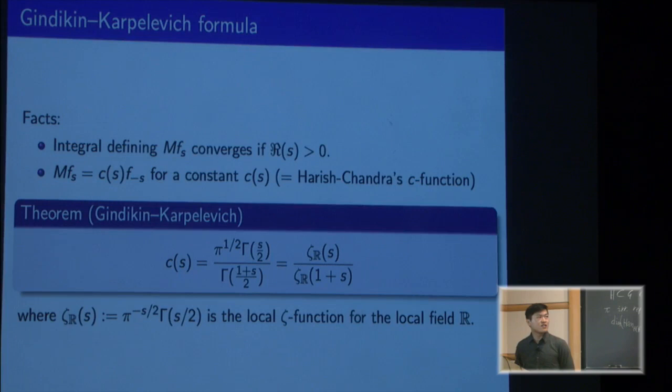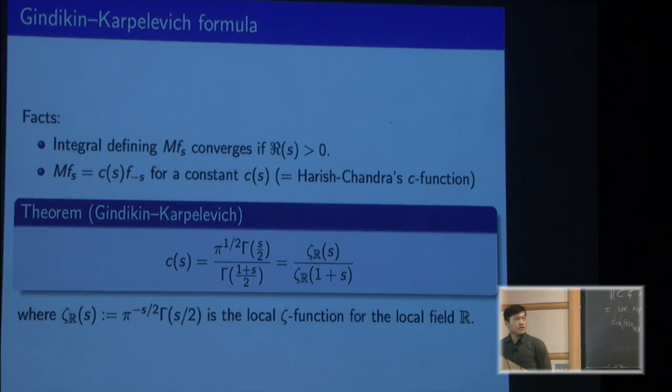Now we get to the formula, which is a theorem due to Gindikin and Karpelevich, which computes this c-function. It's given as a ratio of particular gamma functions with this pi multiple. For the purposes of the rest of the talk, you can see it can be written as just a ratio of local zeta factors, where we're noticing that the reals are a particular local field. The local zeta factors are defined as this normalization of the gamma function.